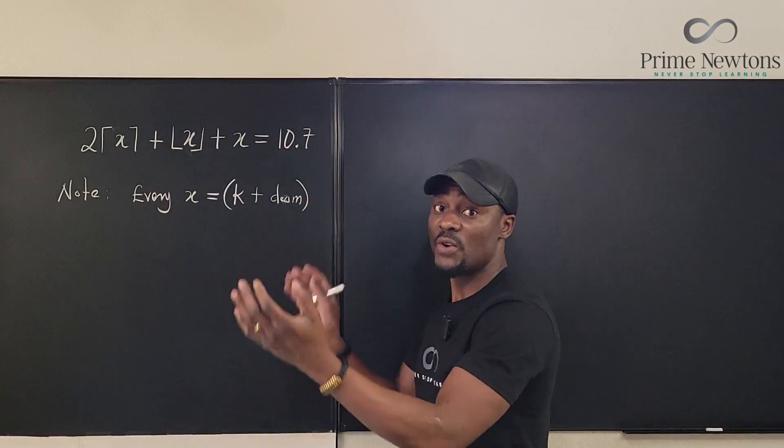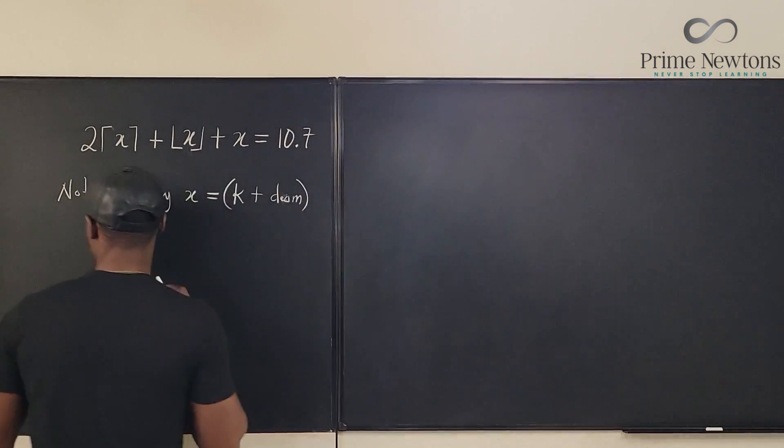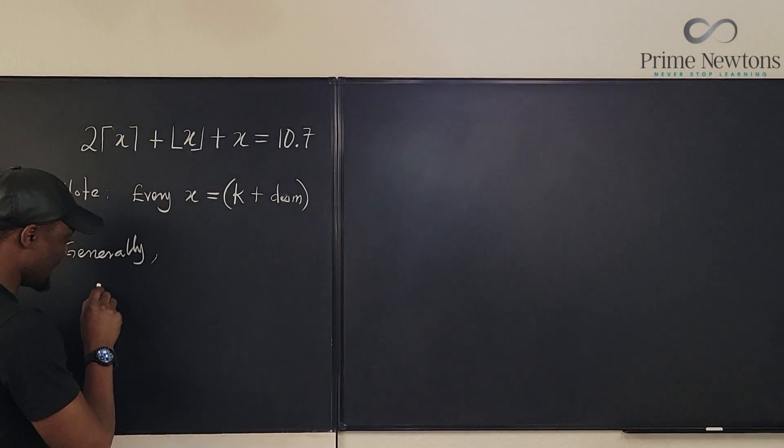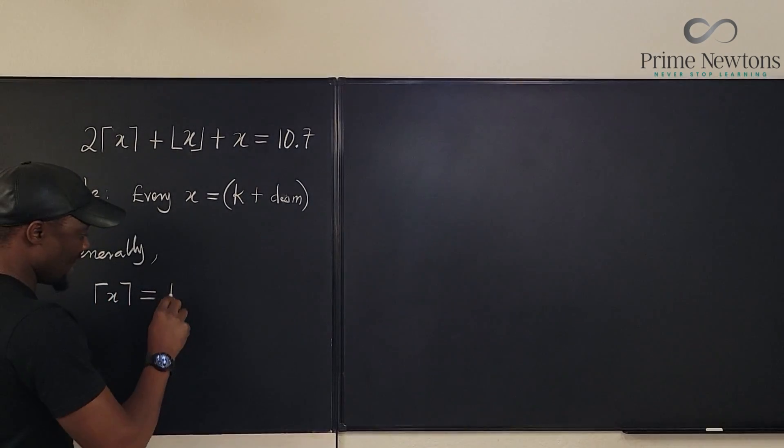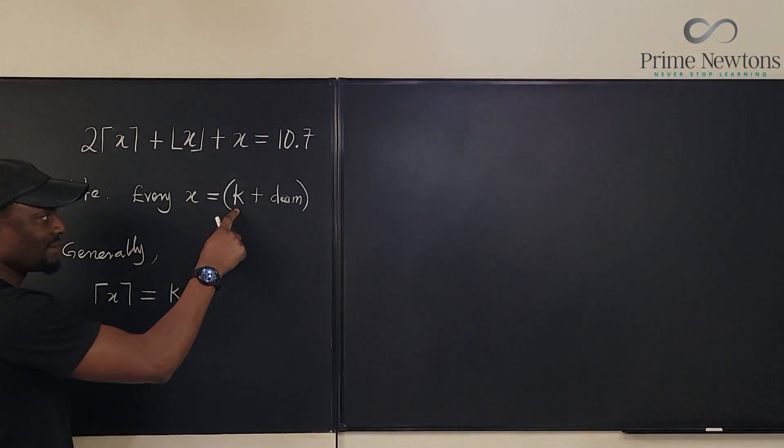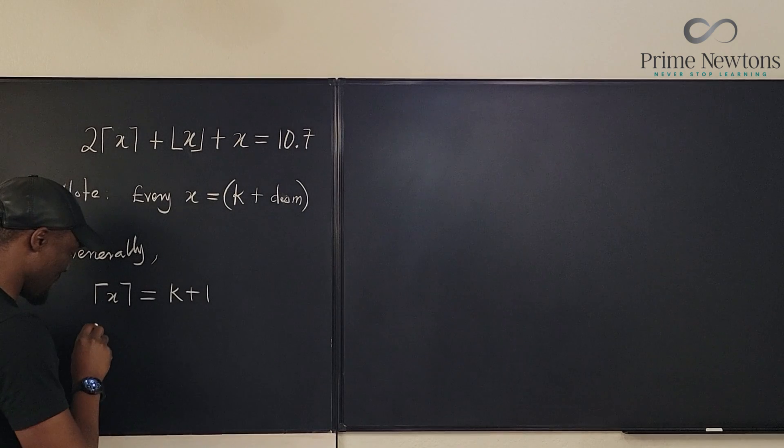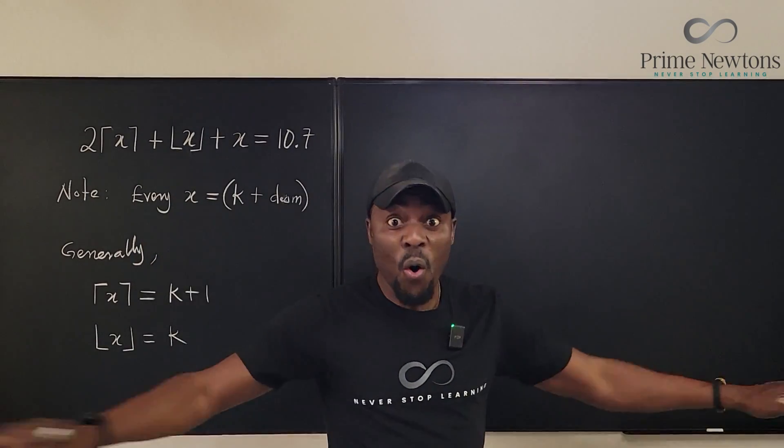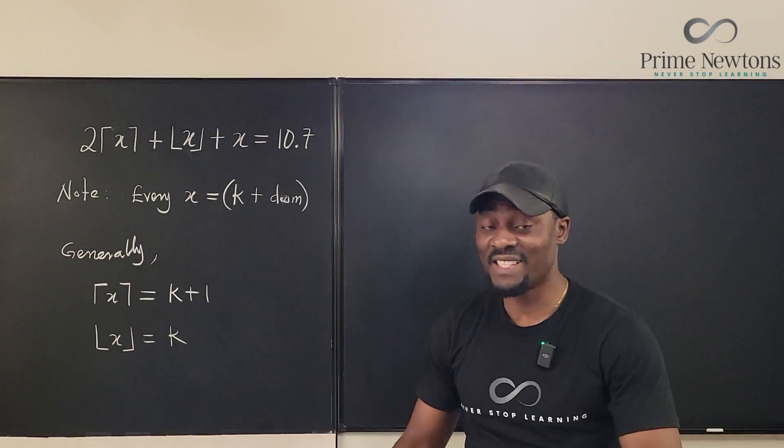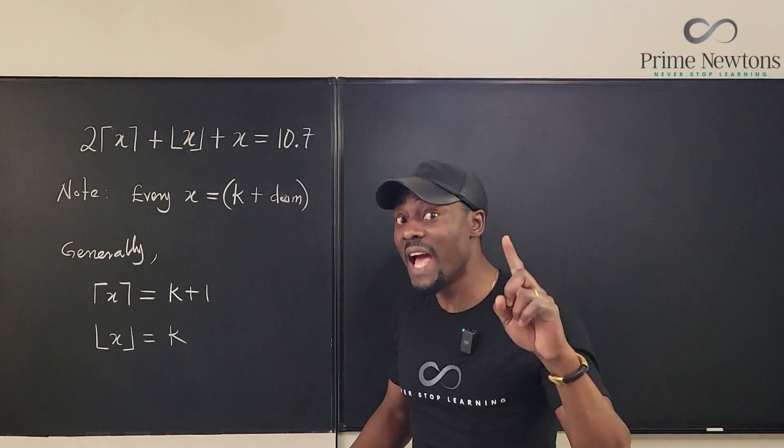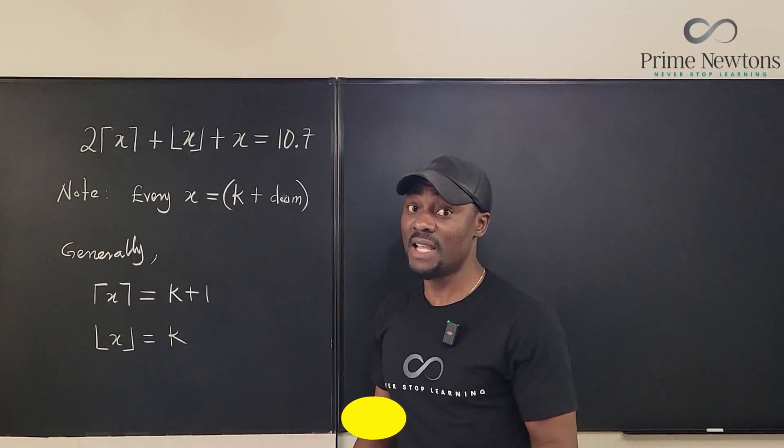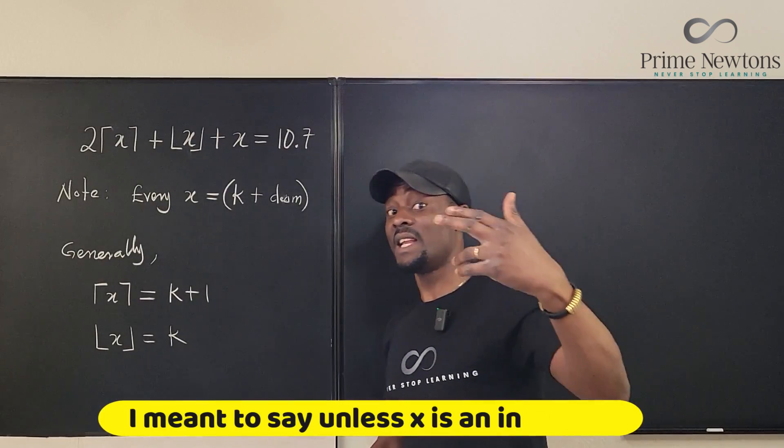So we can say generally, and this is what's going to help us answer the question: the ceiling of X is equal to K plus 1, and the floor of X is K. Unless - watch this - unless X is an integer, because if X is an integer, it is its own ceiling and its own floor.